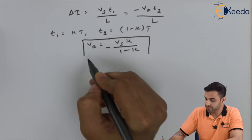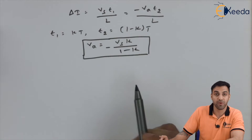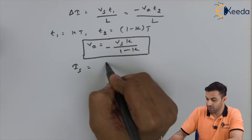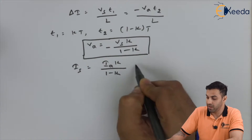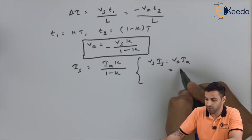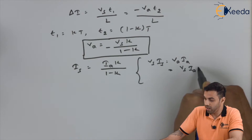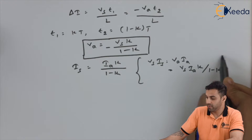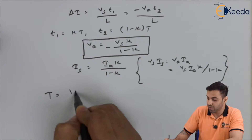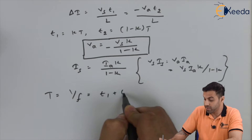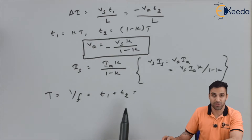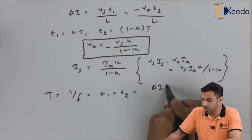I_s equals I_a · k / (1 − k), because V_s · I_s equals V_a · I_a, which equals V_s · I_a · k / (1 − k). To calculate the total time period T, which equals 1/f, we get t1 + t2, and solving gives ΔI·L·(V_a − V_s) / (V_s · V_a).